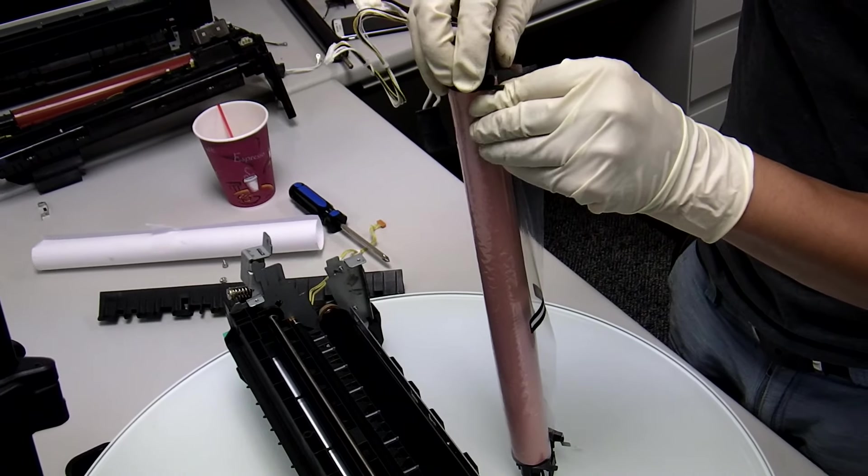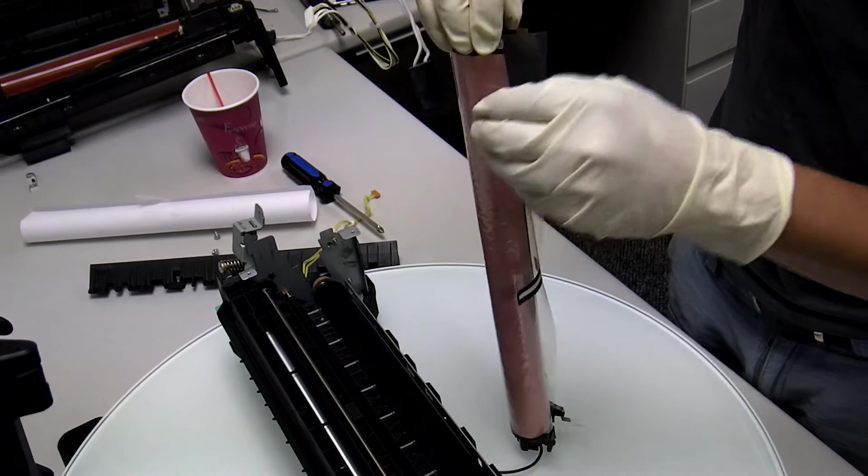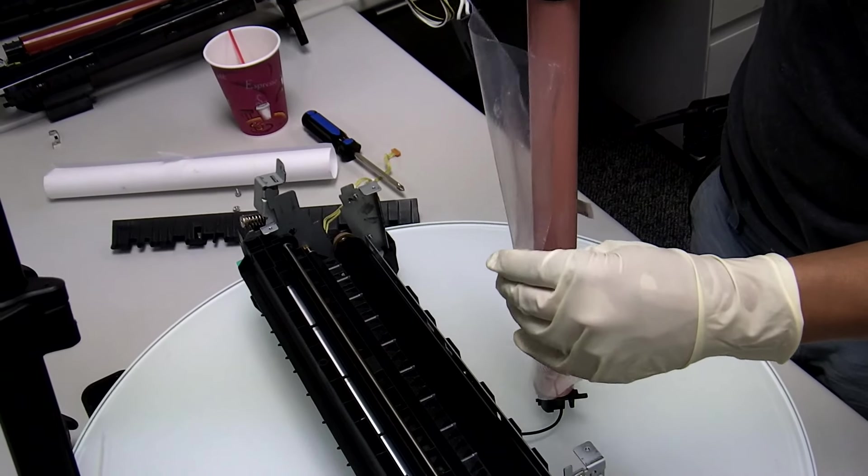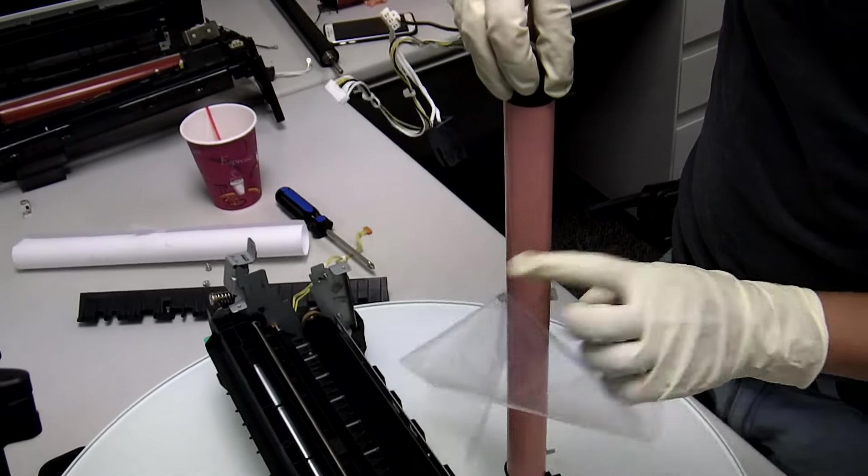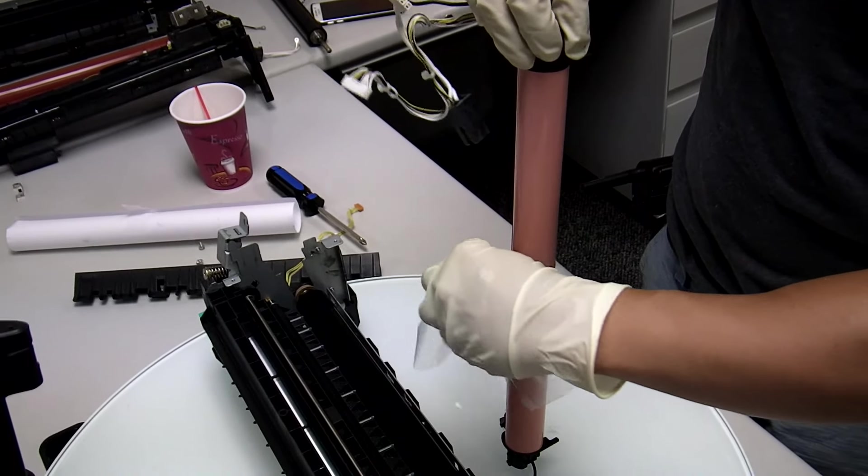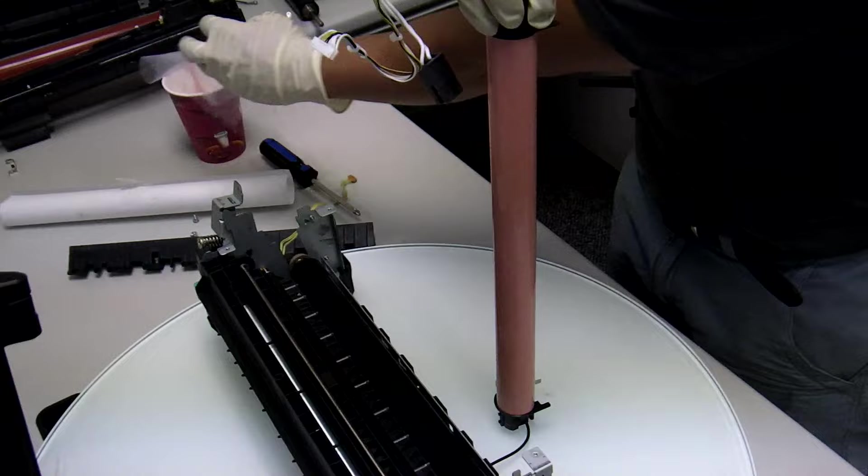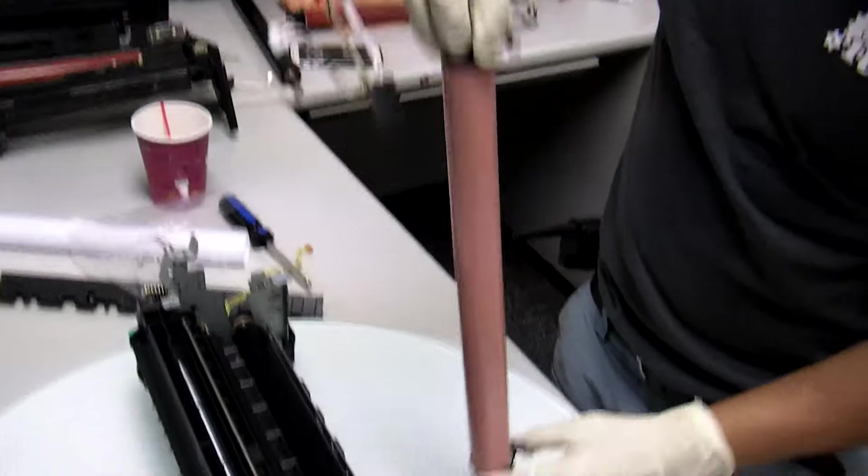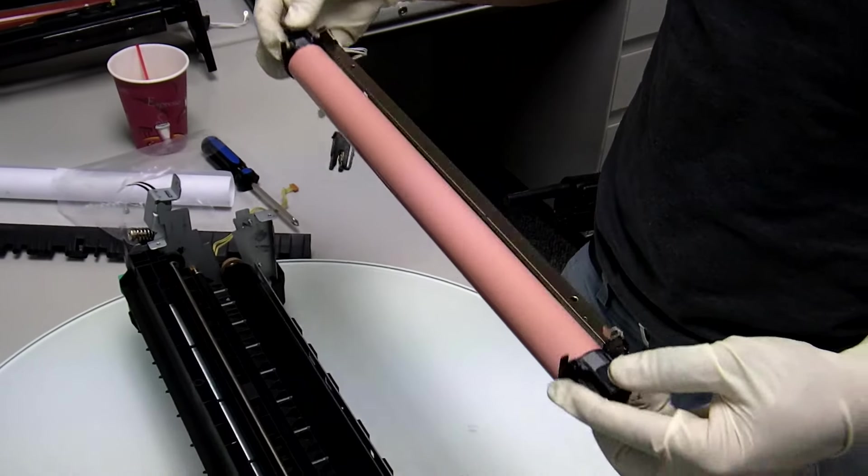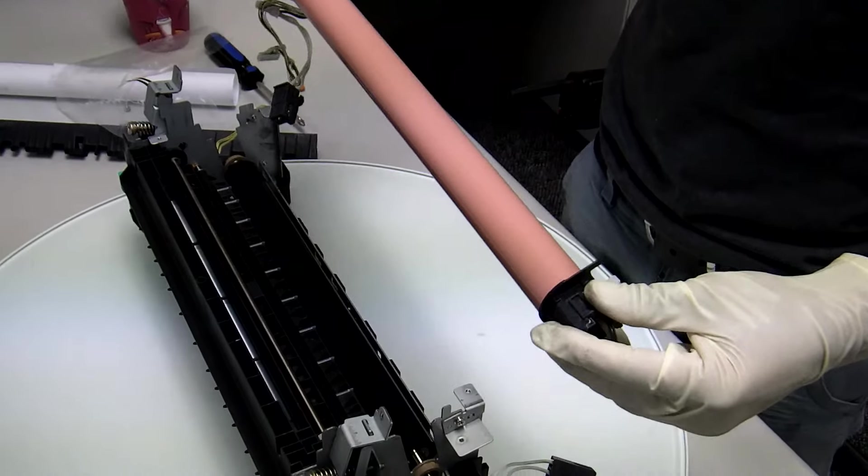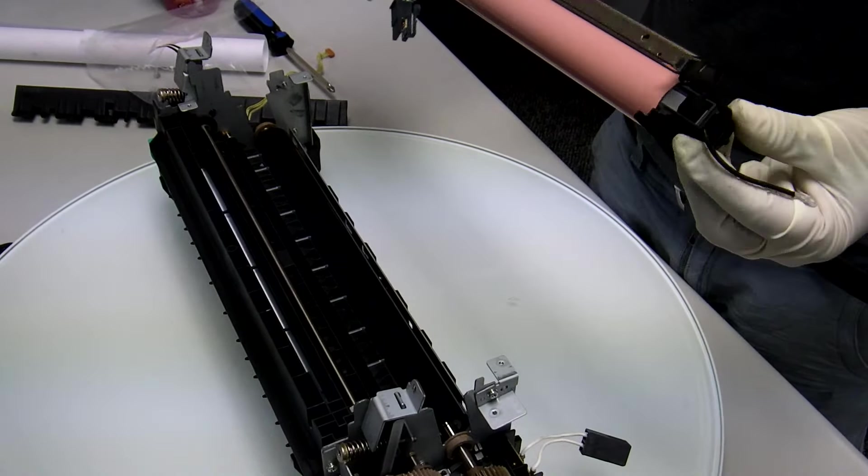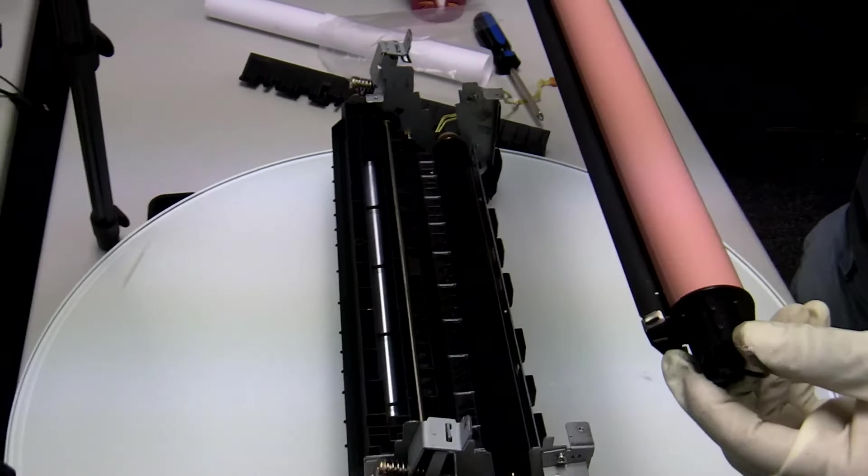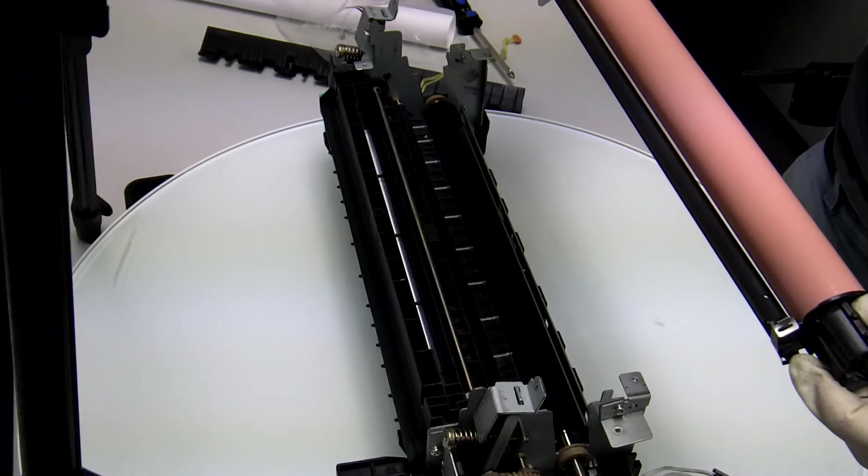Now let's insert the film assembly back in place. Remove the protective plastic to put the film assembly back in place. There are two little knobs on the film assembly. They should be facing up. There should be two more on the other side.